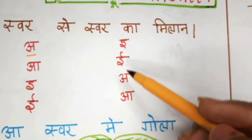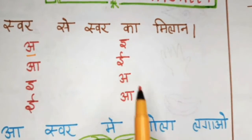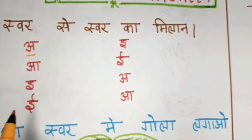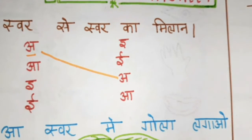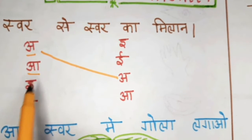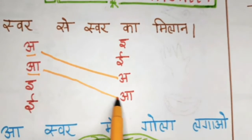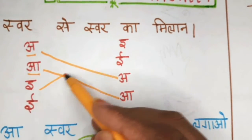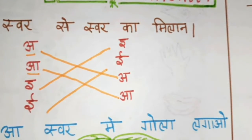When the child is doing the worksheet, if you are looking at it, then you can explain it yourself. Then in different ways you can guide them, and you should know how to do it. The next step is we have to match them.